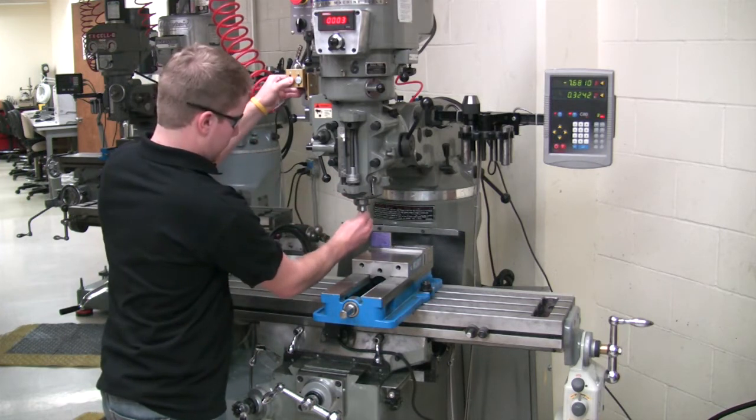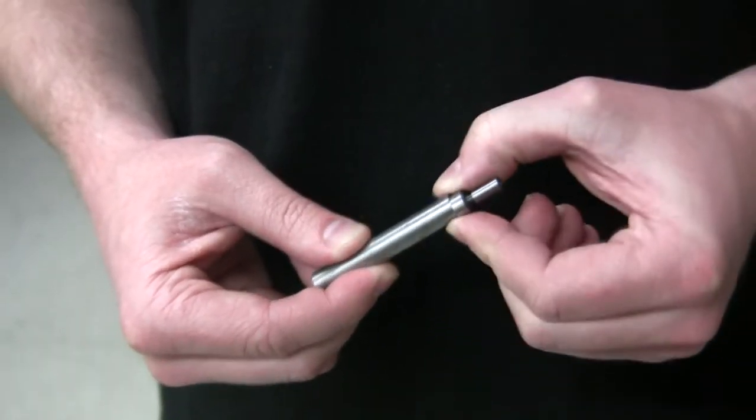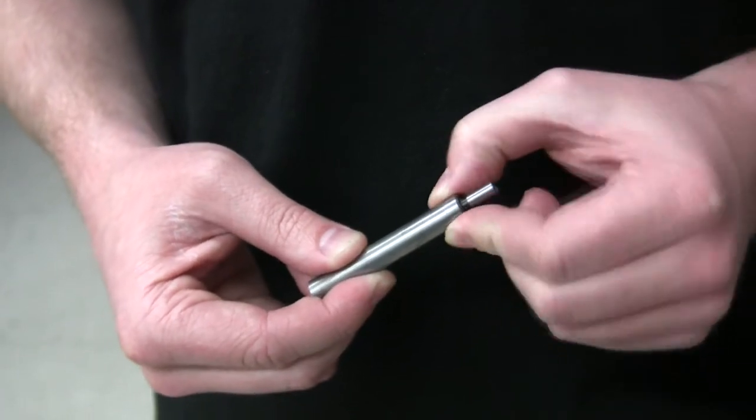Install the edge finder in the spindle. The tip of the edge finder is spring loaded and will be used to locate the edge of the part.